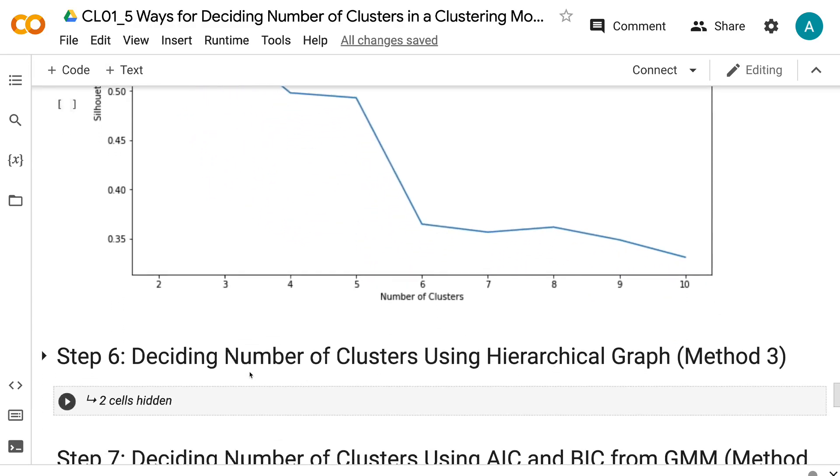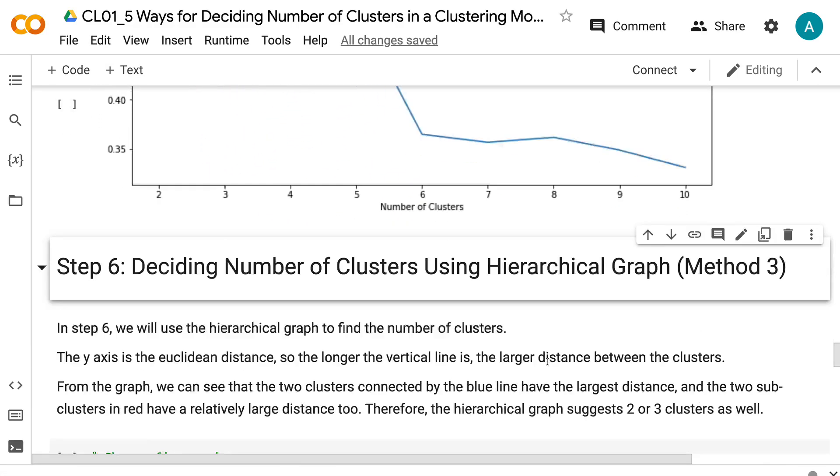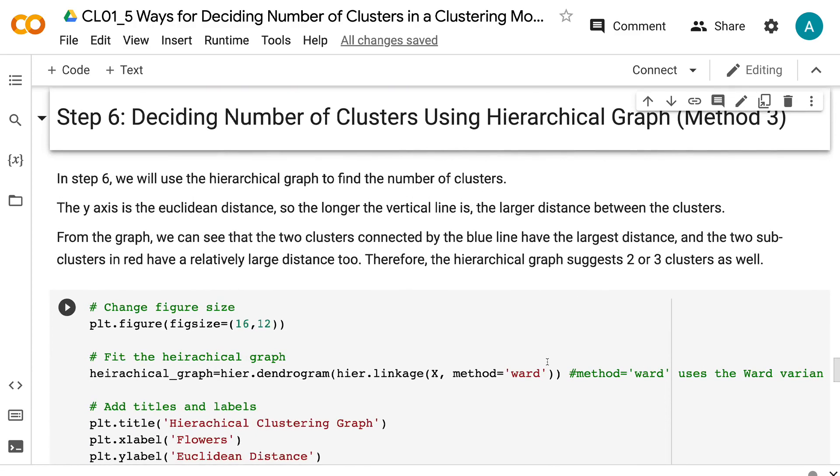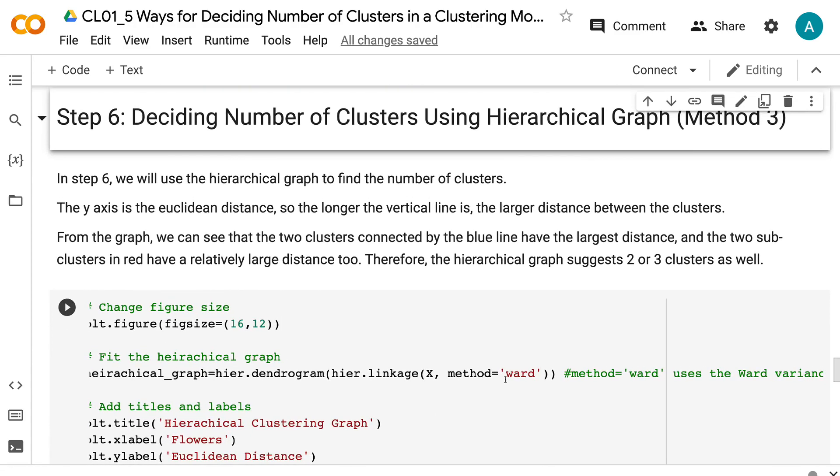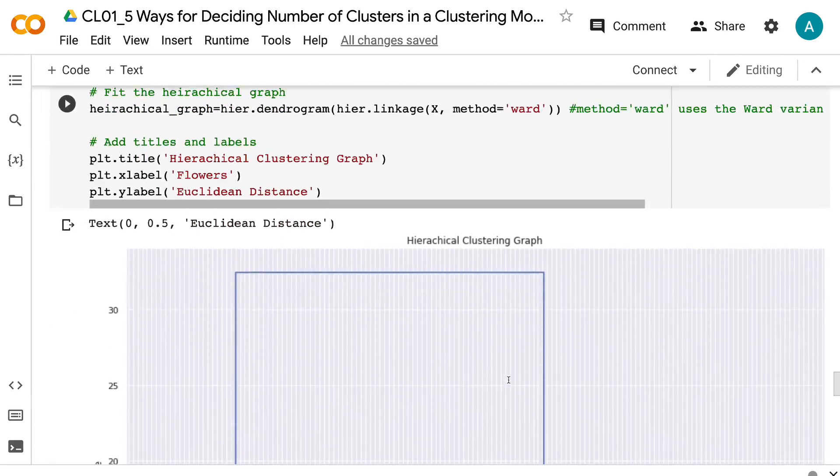In step 6, we will use the hierarchical graph to find the number of clusters. The y-axis is the Euclidean distance. So the longer the vertical line is, the larger distance between the clusters.